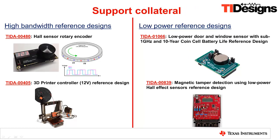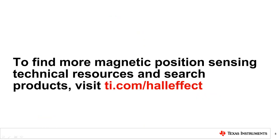There are multiple available TI designs showing how to implement these Hall effect sensors in many applications. Go to TI.com and type in the TIDA part number of interest at the search prompt for further information. To find more magnetic position sensing technical resources and search products, visit TI.com/halleffect.